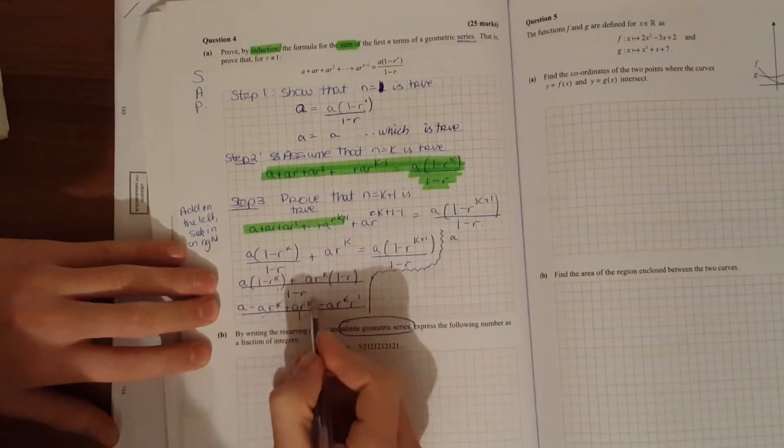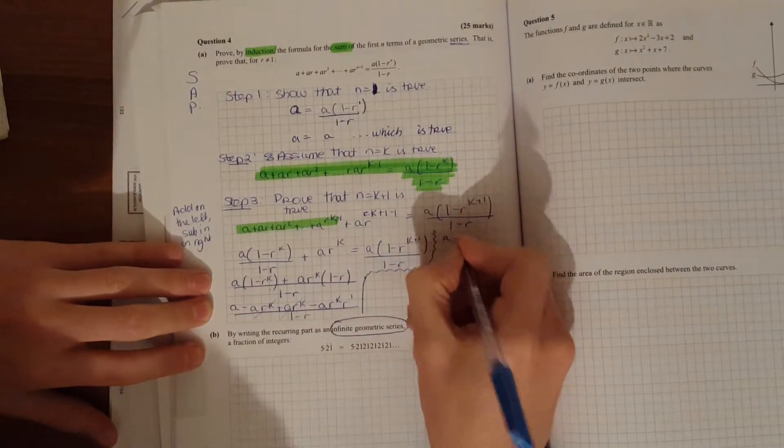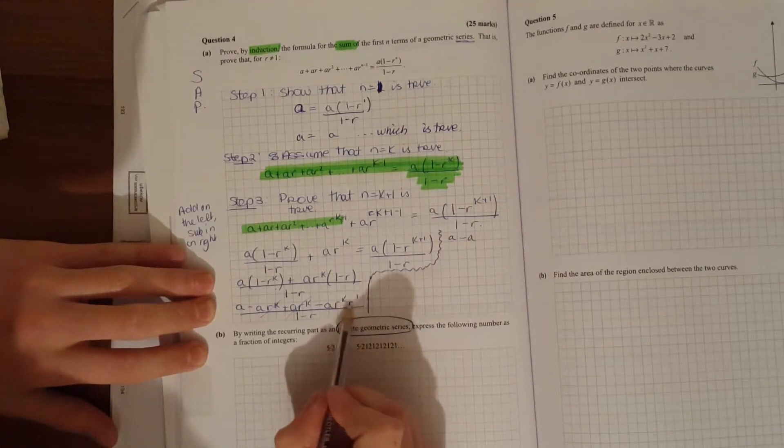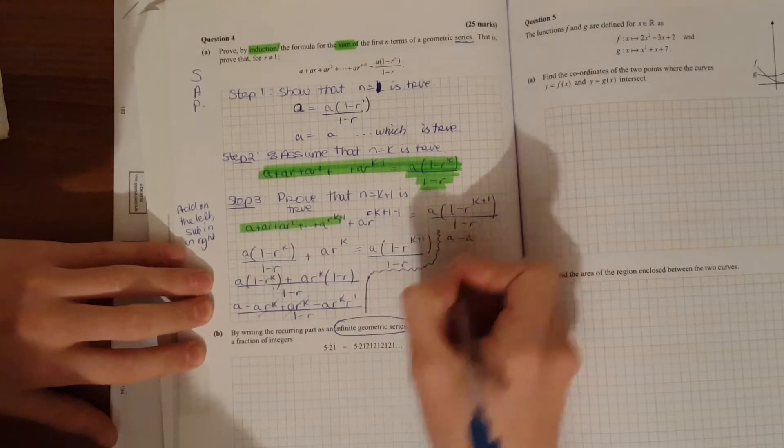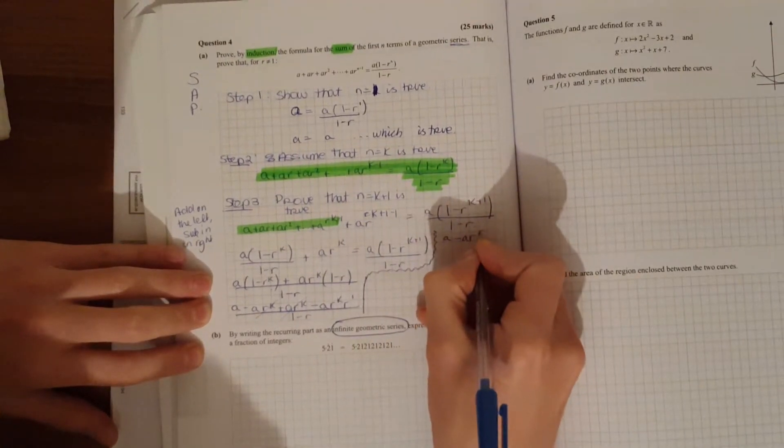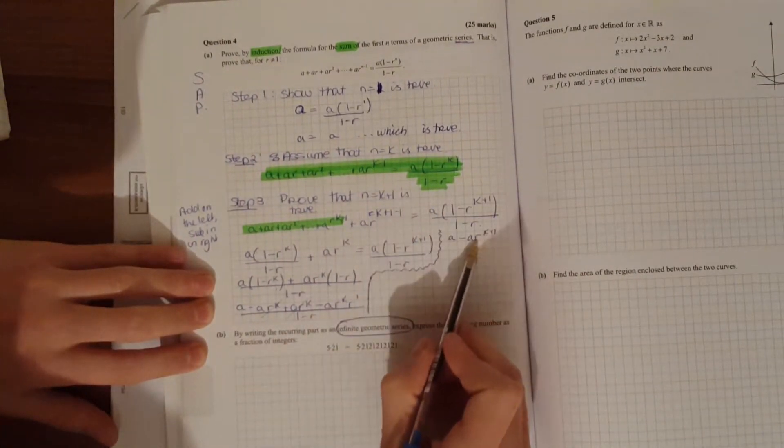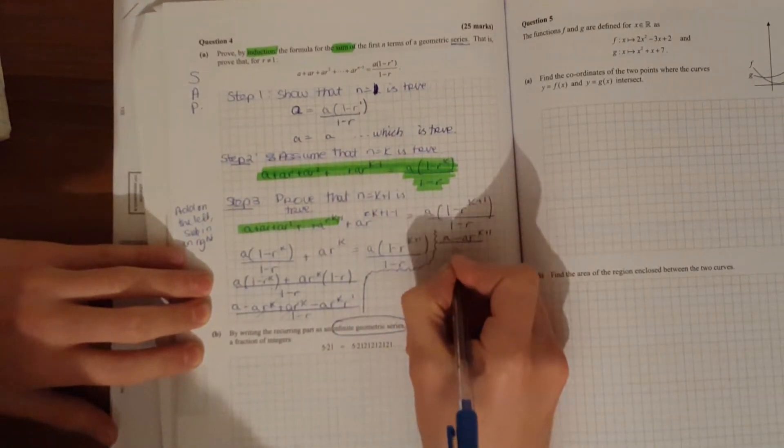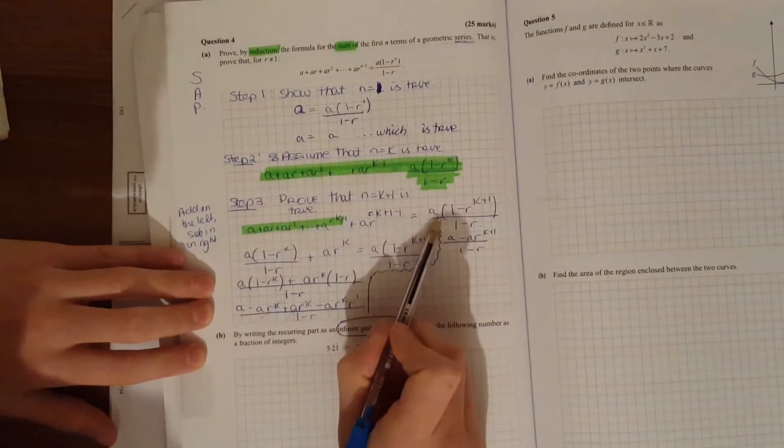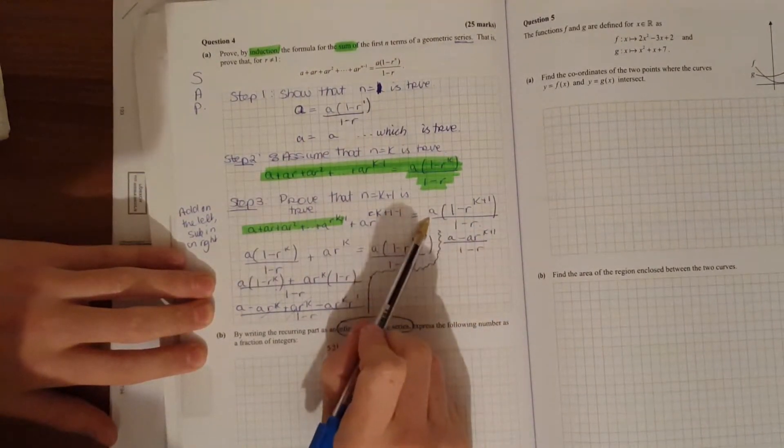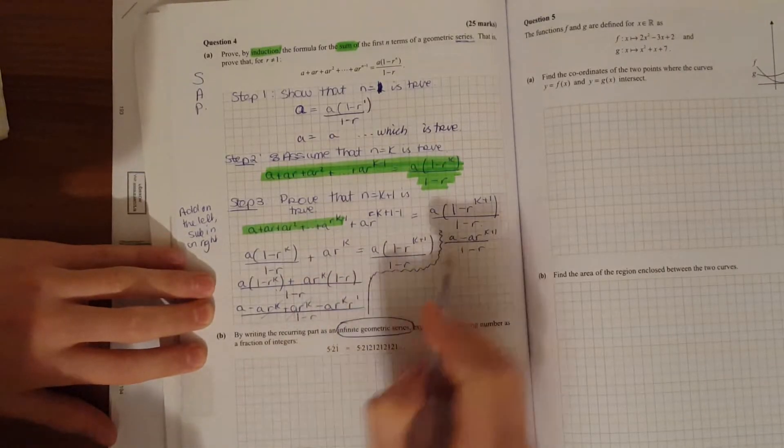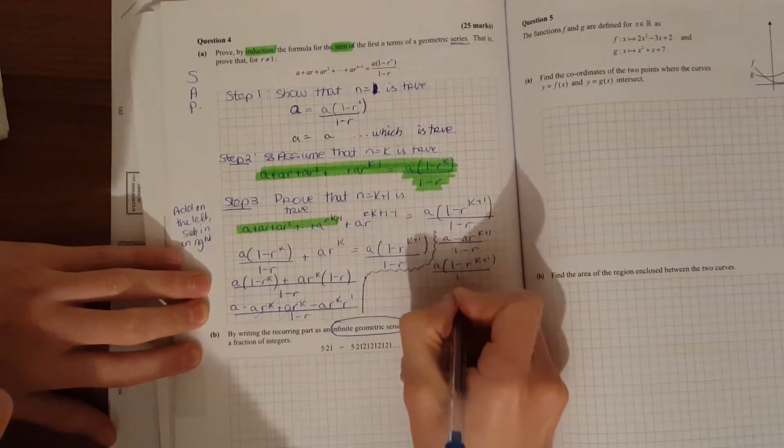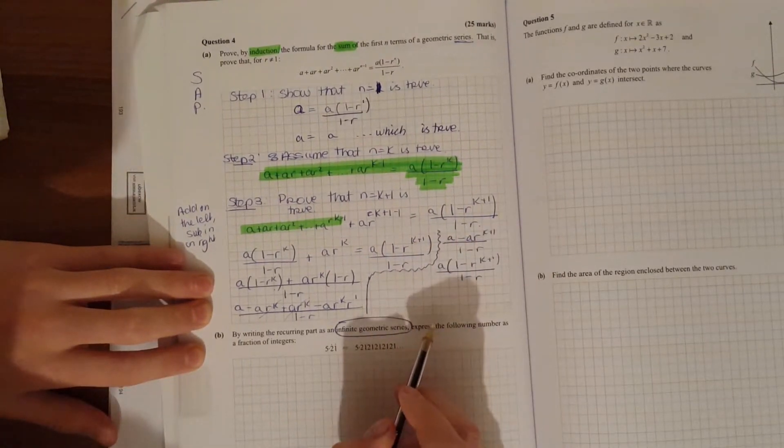So we're left with A minus A times... Look what we need to get. We need to get it in this form. So split this up, go back using your rules of indices. A times R to the K plus 1. If we were doing it the reverse way: R to the K times R to the 1 over 1 minus R. Look at the form we needed. What have they done? We've taken out the A. So A times 1 minus R to the K plus 1 over 1 minus R. And there we go.